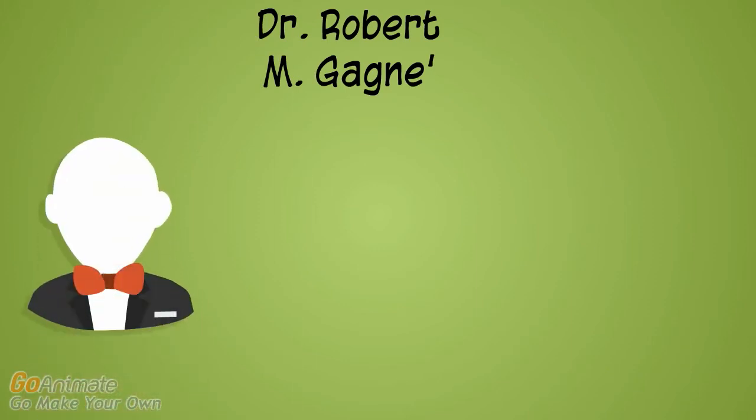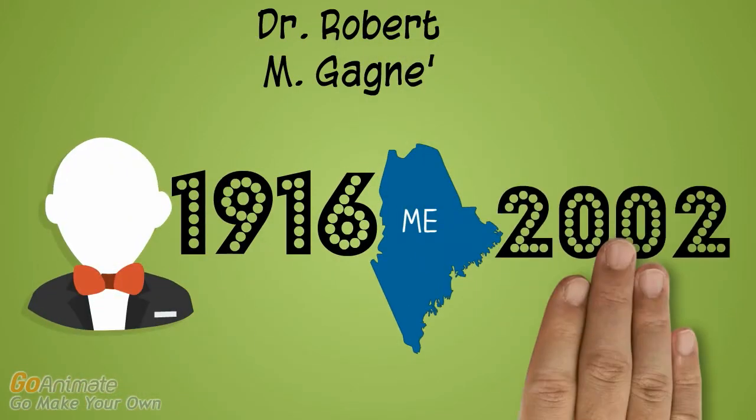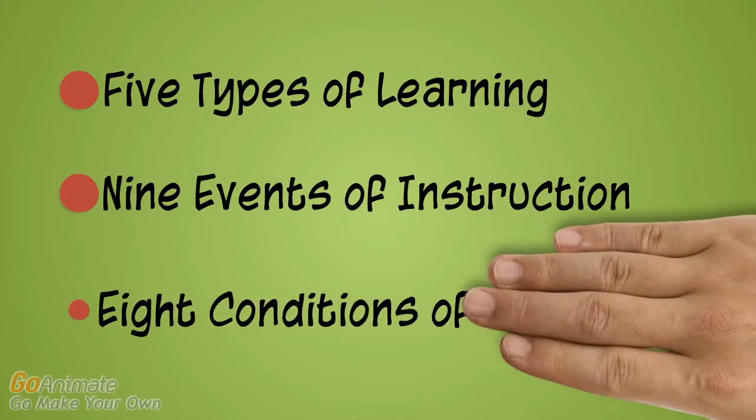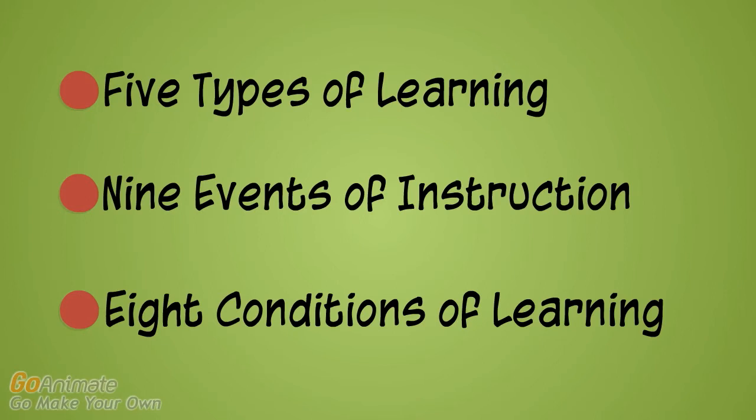Gagné was born in 1916 in Maine and died in 2002. He is best known for the learning theory, the Gagné assumption, which consists of five types of learning and nine events in instruction.